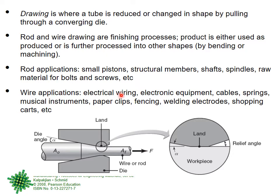Wire applications include electrical wiring, electronic equipment, cables, springs — all springs are made from wire — musical instruments, paper clips, fencing, welding electrodes, and shopping carts. Just wire, one shape, has enormous applications. When you combine rod, wire, and tube, the variety of products based on these three basic shapes is huge.